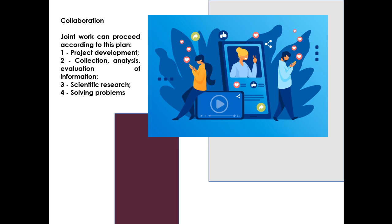The hardest part of online learning is collaboration, which comes with technical and organizational challenges. Joint work can proceed according to a plan: the first point is project development; the second is collection, analysis, and evaluation of information; the third is scientific research; and the fourth is solving problems. In modern reality, education is the product of a large number of users. A modern instructor needs to be a highly educated mentor in the ocean of a wide variety of information, able to understand its quality and quickly provide students with the necessary information products for their development.